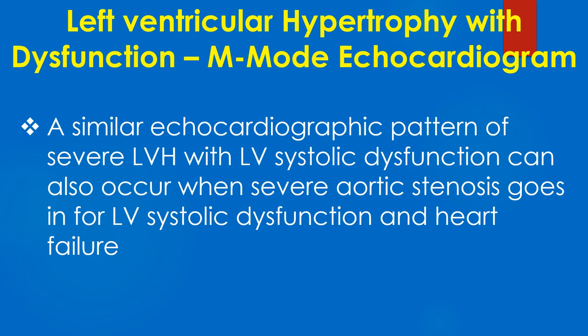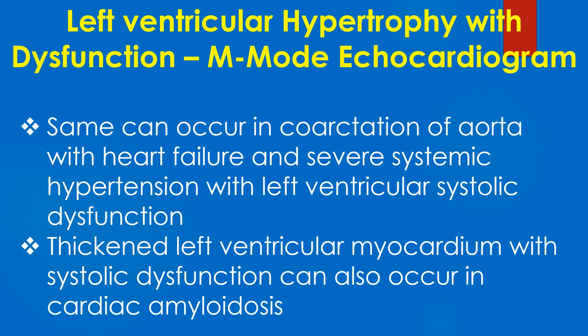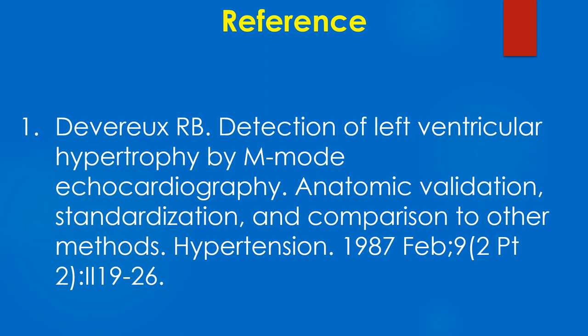In this stage, there can be progressive dilatation of the left ventricular cavity. A similar echocardiographic pattern of severe LVH with LV systolic dysfunction can also occur when severe aortic stenosis leads to LV systolic dysfunction and heart failure, in coarctation of aorta with heart failure, and in severe systemic hypertension. Thickened left ventricular myocardium with systolic dysfunction can also occur in cardiac amyloidosis.